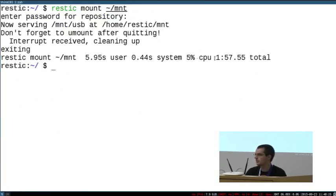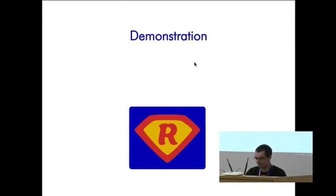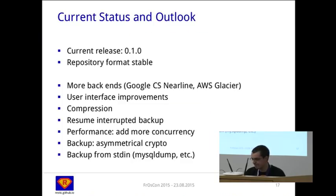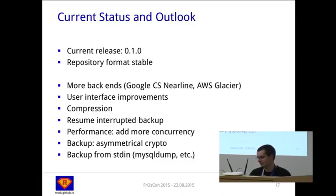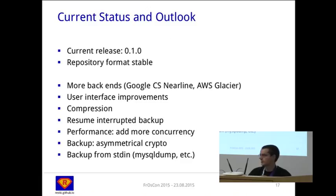Don't forget to unmount. The current status is we have released the first version. The repository format is quite stable, and we'd like to have users using it now. We're using semantic versioning and ensuring the repository format is always compatible, so backups made now will be accessible in a year. We need to implement more backends like Google Cloud Storage Nearline and Amazon Glacier. We'd like to do user interface improvements — the restore workflow is too complicated — and maybe add a dialog-based system. We'd also like to add compression, resume interrupted backups, and more performance.